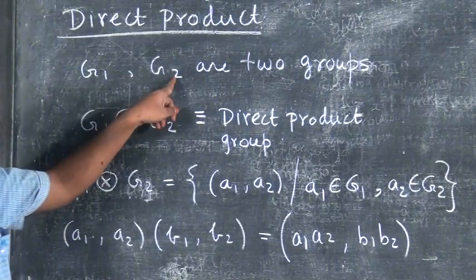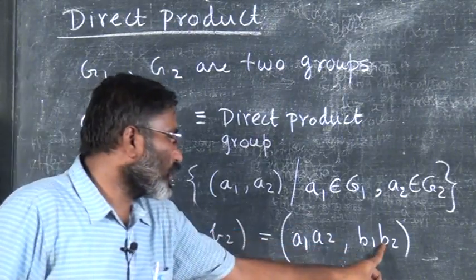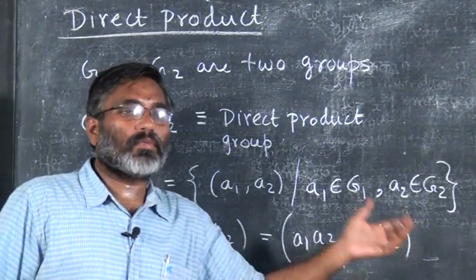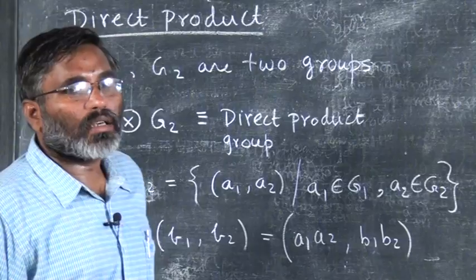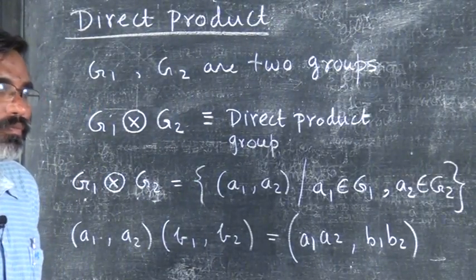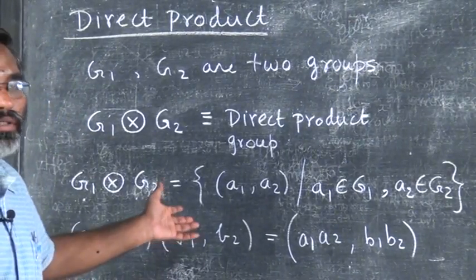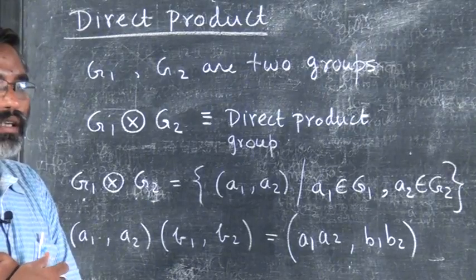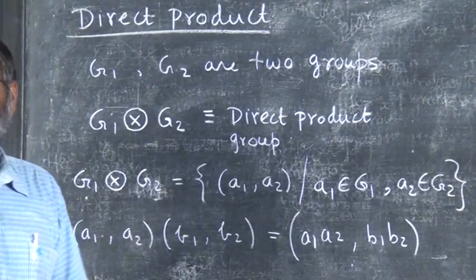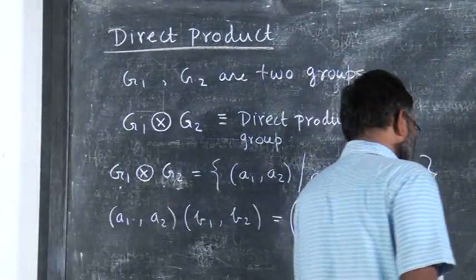Since we have two groups, the compositions may be different — use the composition of G1 for the first coordinate and G2 for the second, and put them together as an ordered pair. The identity is (e1, e2), and the inverse of (a1, a2) is (a1⁻¹, a2⁻¹). This forms a group, called the direct product group.